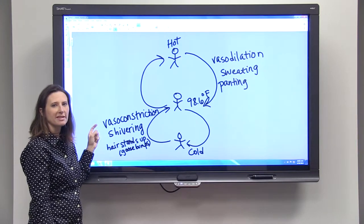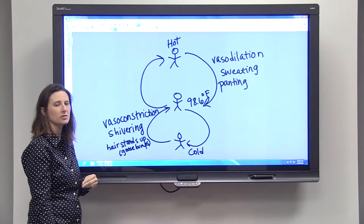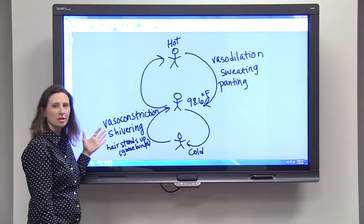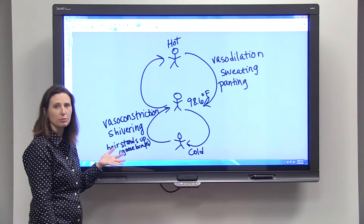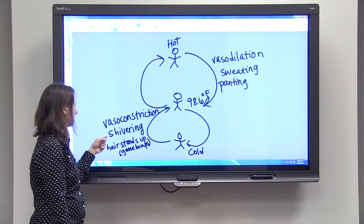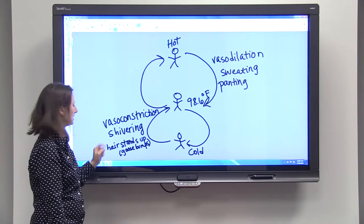Vasoconstriction, so your blood vessels actually get smaller closer to the surface of your skin, so they're not losing as much heat. You shiver, and that shivering actually produces heat. You're using up your energy in order to move and that produces heat.